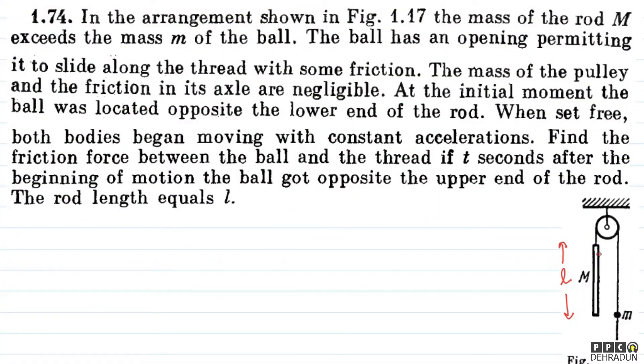So, let's understand the question. Basically, this rod has length small l. And the ball that we have, of mass small m, is here. And at the beginning, where was this? Initially, the ball was located opposite the lower end of the rod. As shown in the diagram, it was at that location, opposite the rod's lower end.